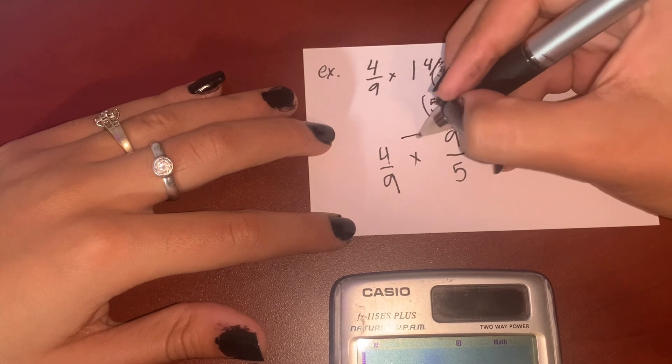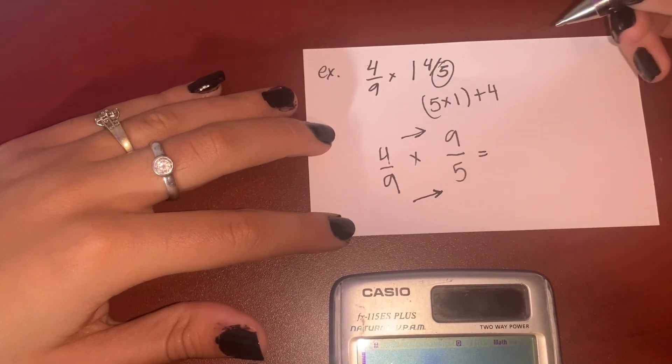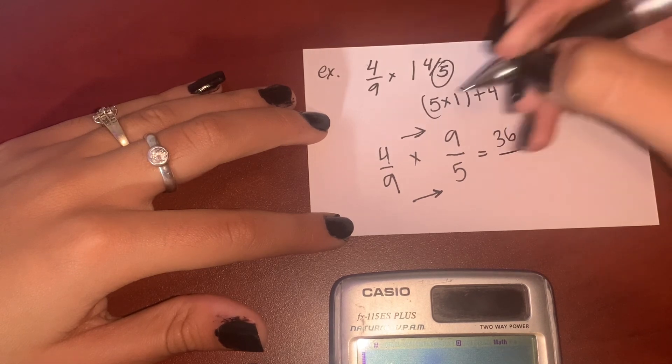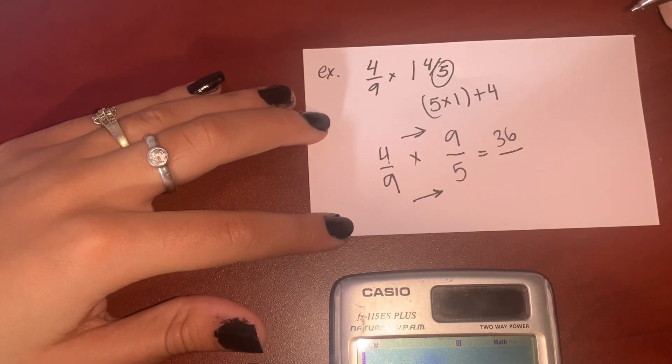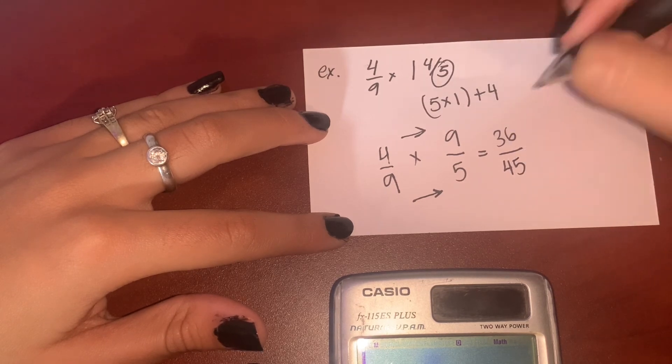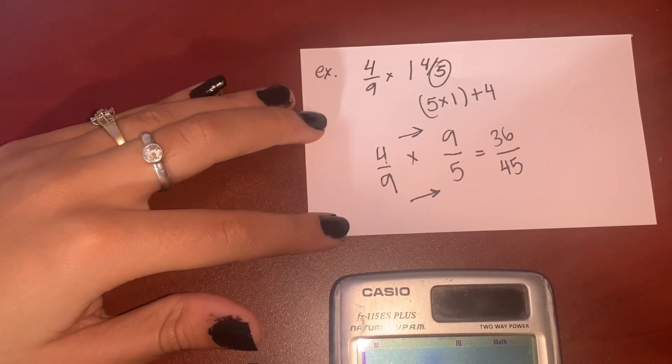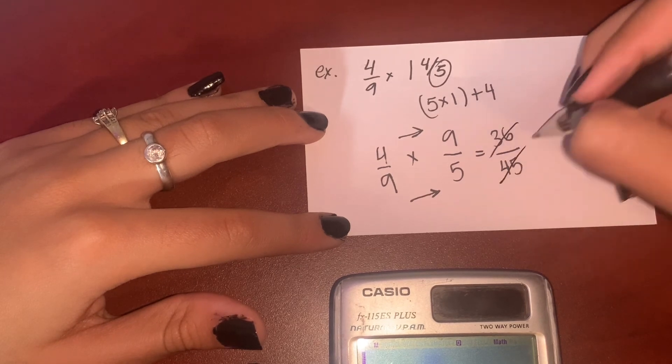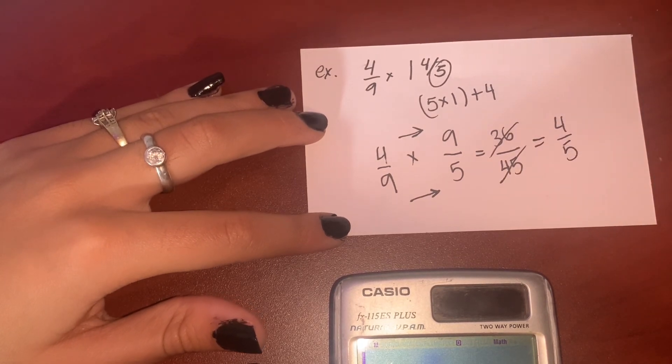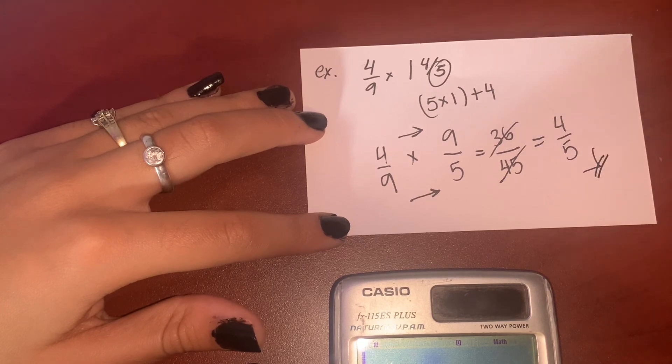And how to multiply? Just straightforward. 4 multiplied by 9 is 36, 9 multiplied by 5 is 45. These have in common the multiple of 3, so I simplify it and bring it to 4 over 5. And that's our final answer.